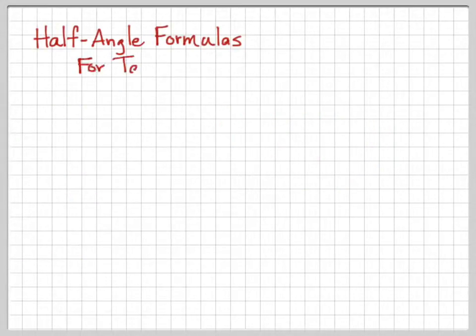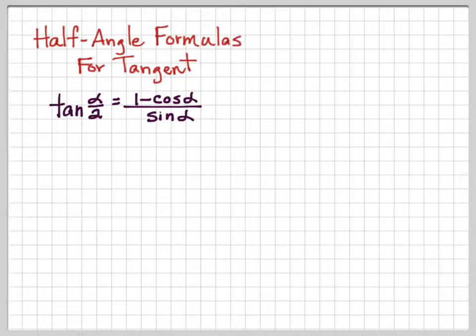Okay, half-angle formulas for tangent. Tan(α/2) = (1 - cos α)/(sin α). Tan(α/2) is also sin α/(1 + cos α).